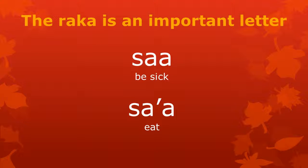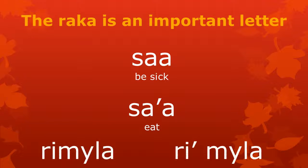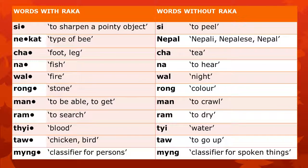The RAKA is an important letter in Atong. It is the RAKA that makes the difference between words like SA (sick) and SA'A (eat). And it is only the RAKA that makes the difference between these two expressions — and you don't want to get those wrong. Here we see some more examples of pairs of words that are different because of the presence or absence of a RAKA.